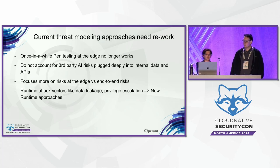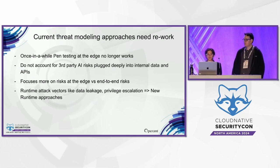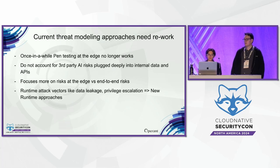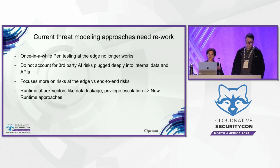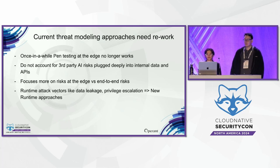Current threat modeling approaches are falling short when it comes to AI apps. As we've gone through digital transformation to cloud-native, pen testing approaches have evolved and now include APIs. But they are still very manual, done once in a while, and just done at the edge at public APIs. With AI apps, we're building on top of third-party foundational models and fine-tuning them, so they get deeply plugged into our data stacks, vector embeddings, and third-party API providers. Threat modeling needs to extend inside the application. And attacks like data leakage, exfiltration, privilege escalation, and jailbreaking are all happening at runtime.